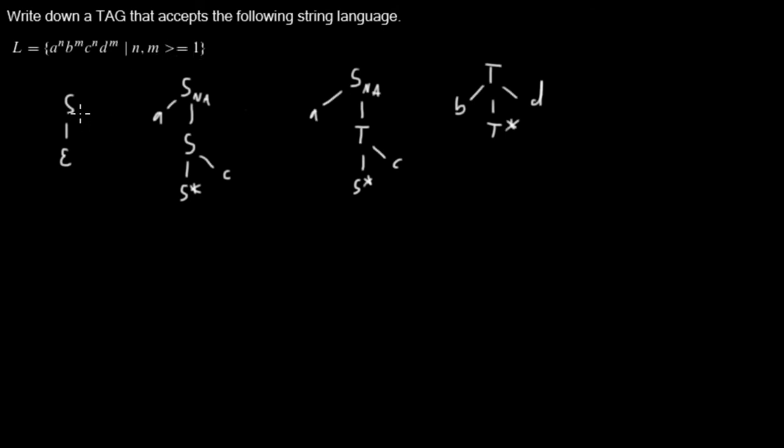So what I'm doing is I'm writing another subscript here, which is OA, which means obligatory adjoin. So I'm forced to adjoin here. I'm not allowed to end the derivation in this tree.